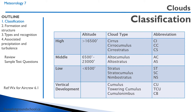We divide clouds into four classifications: high, middle, low, and vertical development. A high cloud has the prefix of cirrus and is above 16,500 feet. We have clouds like cirrus — those high wispy clouds — cirrocumulus, and cirrostratus.